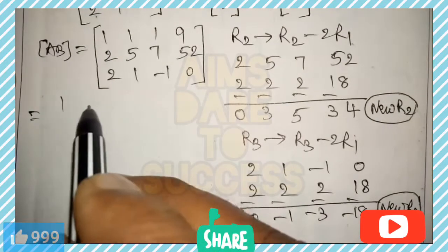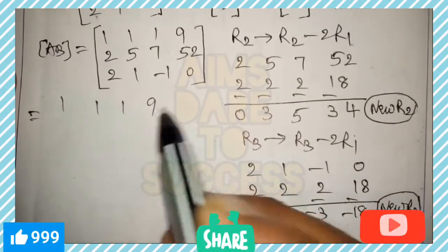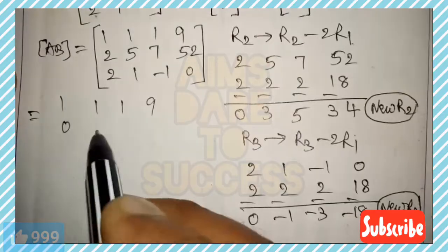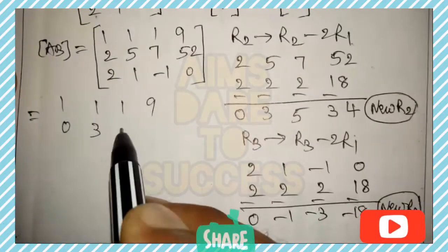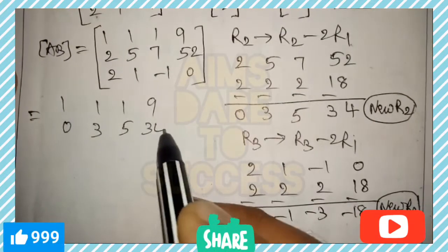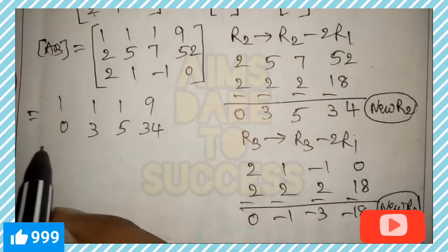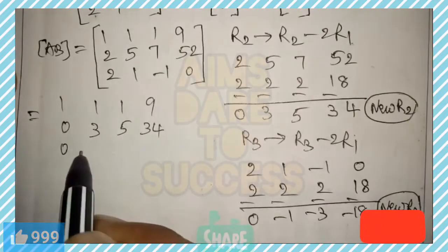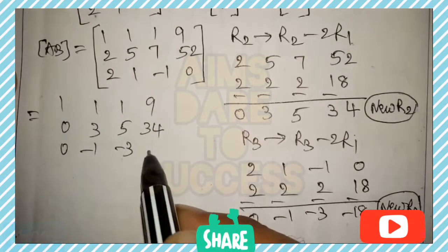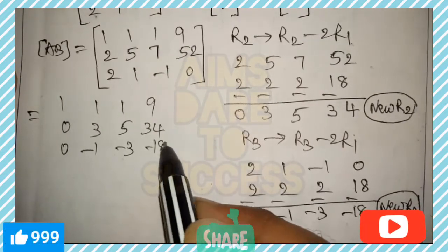Write the updated matrix: R1 stays the same as [1, 1, 1, 9], new R2 is [0, 3, 5, 34], and new R3 is [0, -1, -3, -18]. The first column now has the pattern 1, 0, 0.